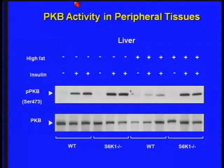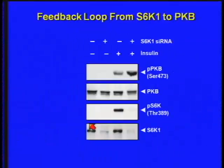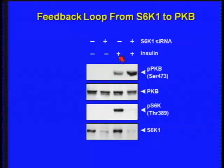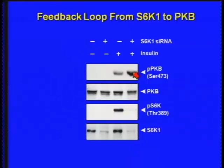We then took an insulin-responsive cell line and treated it with RNAi to S6 kinase. In wild-type cells stimulated with insulin, we activate AKT and S6 kinase. But if we knock down S6 kinase, we really potentiate PKB signaling. My interest changed at this point because — remember — PKB is down in the wild-type high-fat animals, yet these animals are growing. PKB has suppressed a major growth pathway, so how is this pathway driven?